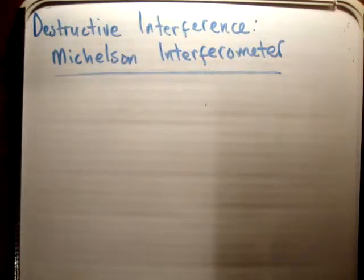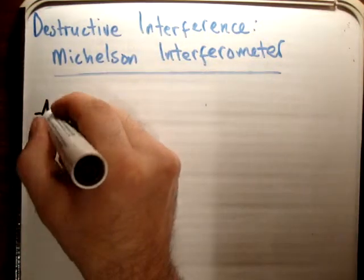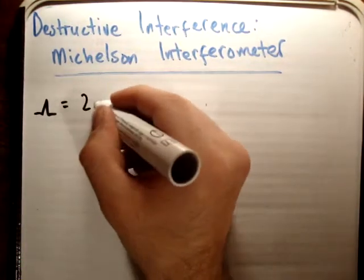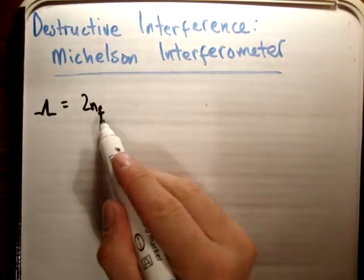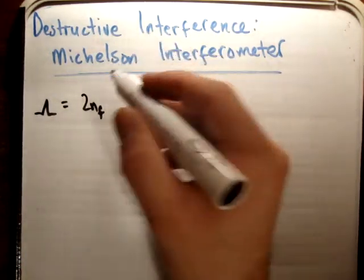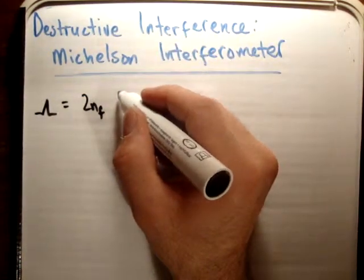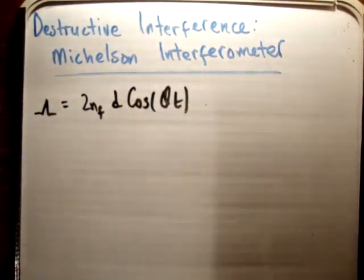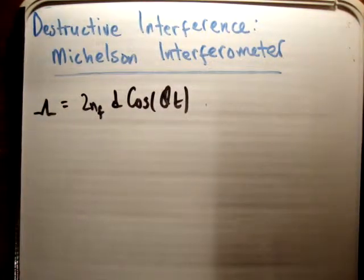In a previous video, I proved how to get the optical path difference for thin film interference. And we found that there was 2 n sub f, where n sub f is the refractive index of your thin film, times d times the cosine of theta t, where d was the depth of your thin film, and theta t is the angle of incidence inside your medium.